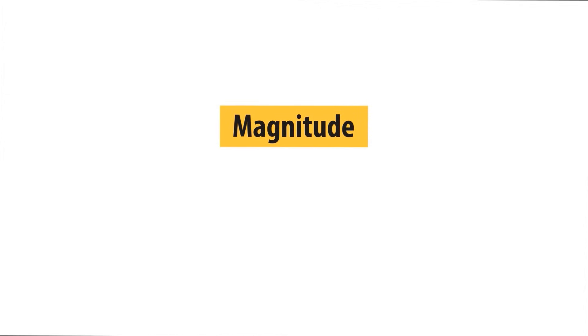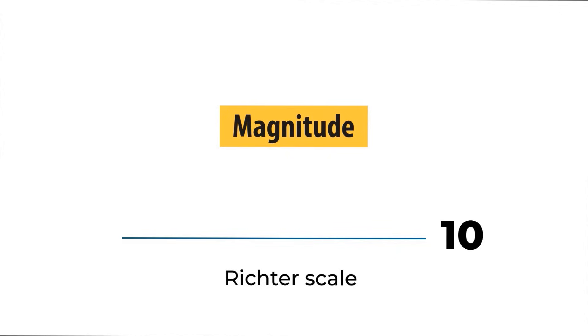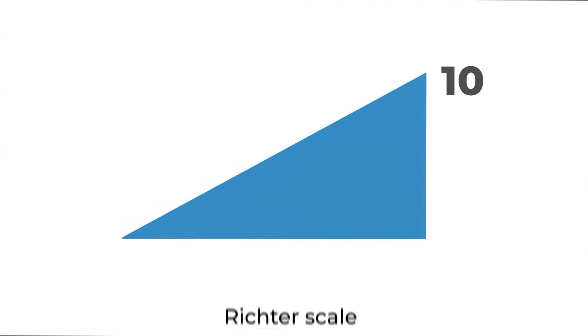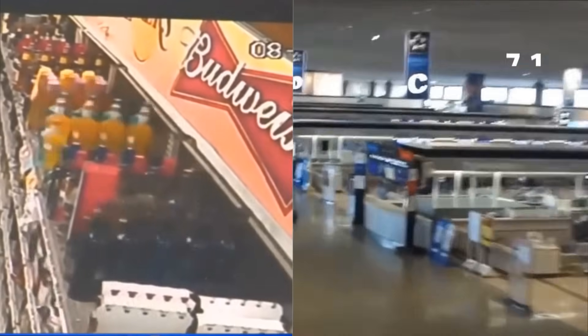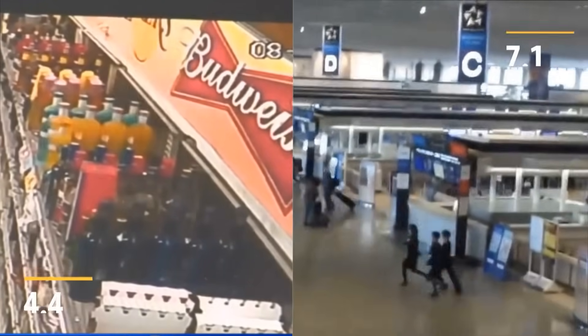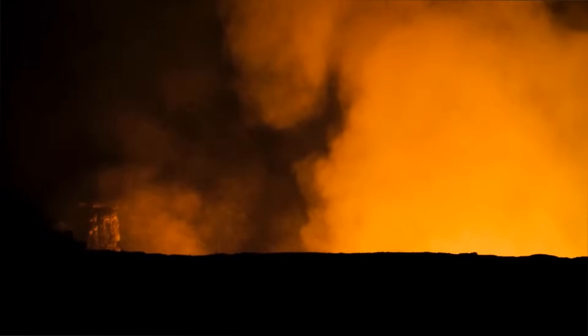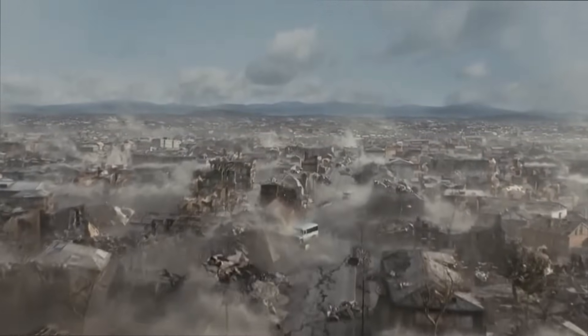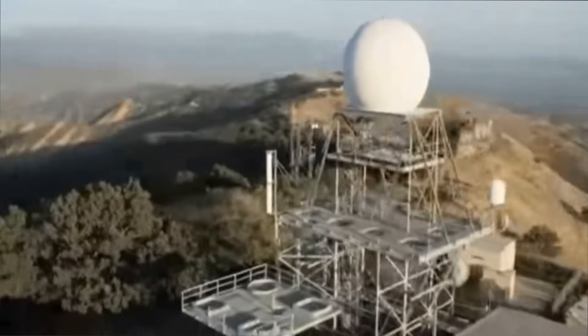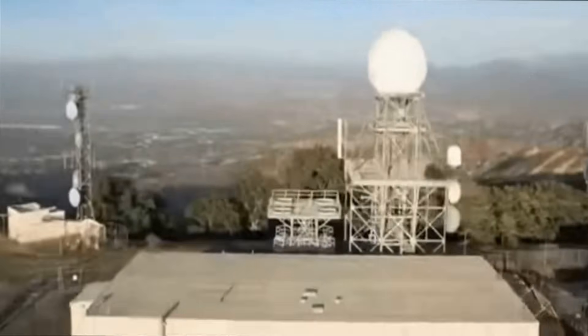Magnitude is measured on the Richter scale from 0 to 10, but it is not linear — it is logarithmic. This means an earthquake of magnitude 5 is 10 times more intense than one of magnitude 4. Comparing magnitudes 7 and 4, a magnitude 7 earthquake would be one thousand times stronger. One way to detect an approaching earthquake is when the Earth's surface emits radioactive gases into the air, usually 5 to 10 days before the earthquake.